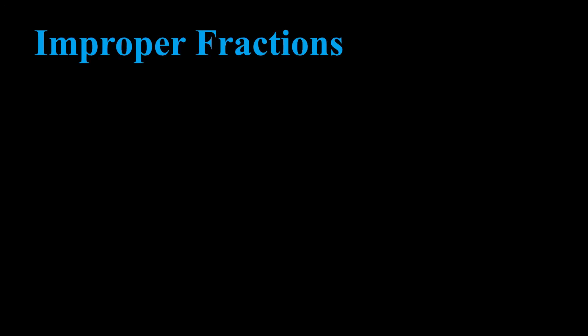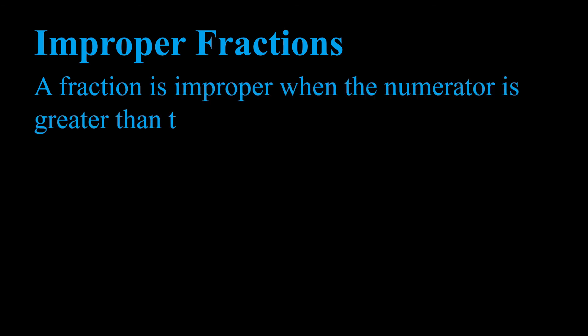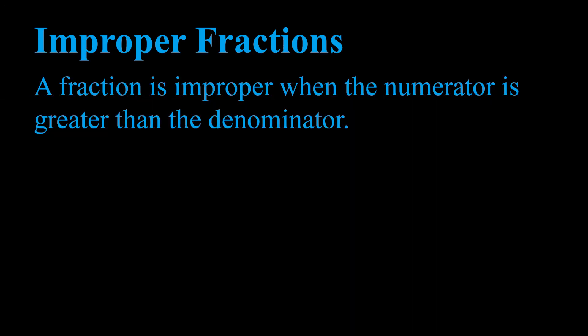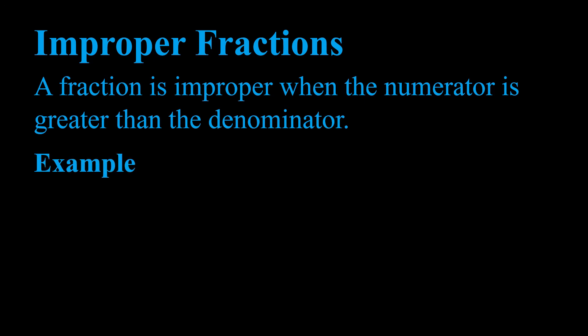A fraction is improper when the numerator is greater than the denominator. As the prefix 'im' suggests, this is directly opposite to a proper fraction. Our first example is three halves, or three divided by two. Notice the numerator, three, is larger than the denominator, two, which means this meets the criteria of being an improper fraction.